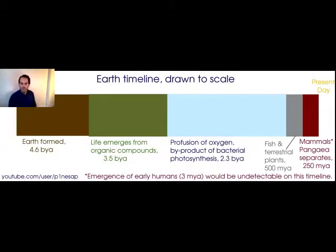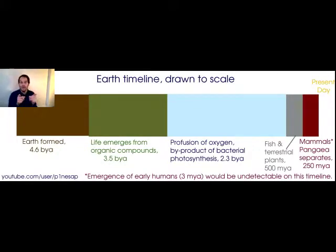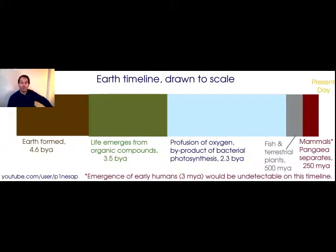I've also drawn a timeline about the history of the Earth. You can see 4.6 billion years ago the Earth was formed, and life emerges from organic compounds less than a billion years later. Those bacteria were releasing oxygen through photosynthesis, and 2.3 billion years ago — about half of the history of the Earth — the atmosphere drastically changed to the oxygenated atmosphere that we enjoy today.